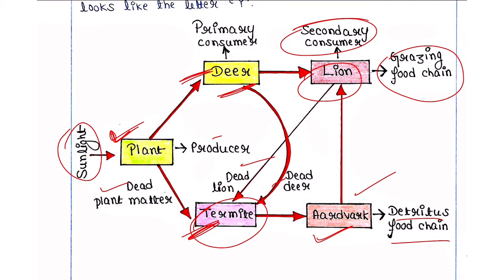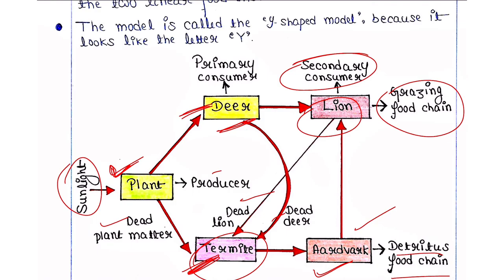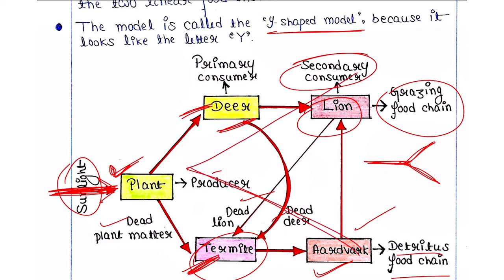The sequences are now not in a linear position. This model is called the Y-shaped model because it looks like the letter Y. You can see that these two parts form the shape of Y. This is all about the food chain.